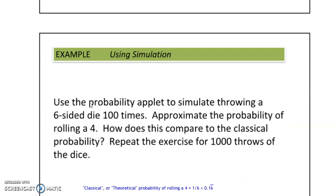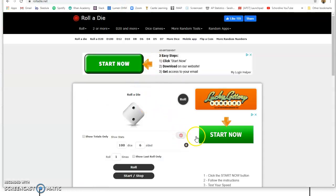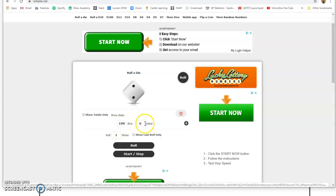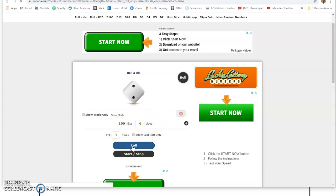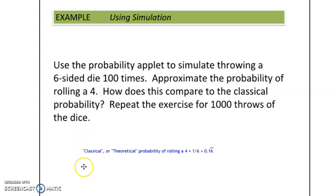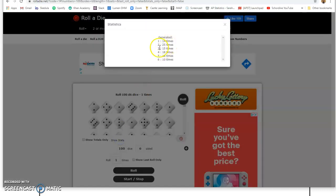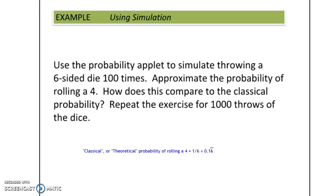To use simulation, we already used it for coin flipping. Now let's do simulation for die rolling. I have 100 dice and I'm rolling them by clicking roll. We have all of these dice — the problem is asking us to approximate the probability of rolling a four. This is experimental probability based on a simulation. According to the stats, I rolled a four 18 times out of 100, meaning 0.18, or about 18%. The classical probability is 0.16 repeating, so it's a little bit higher than the classical probability.